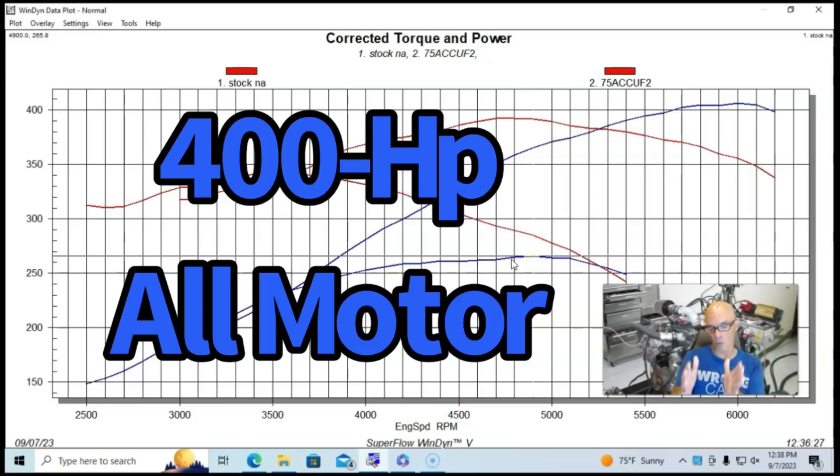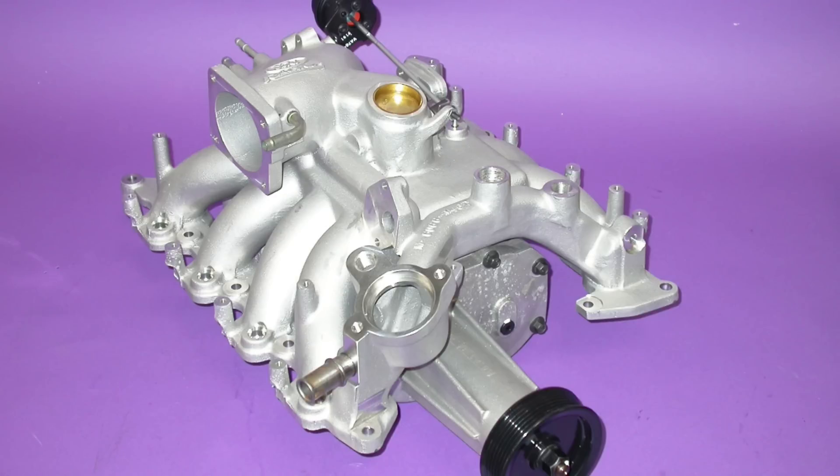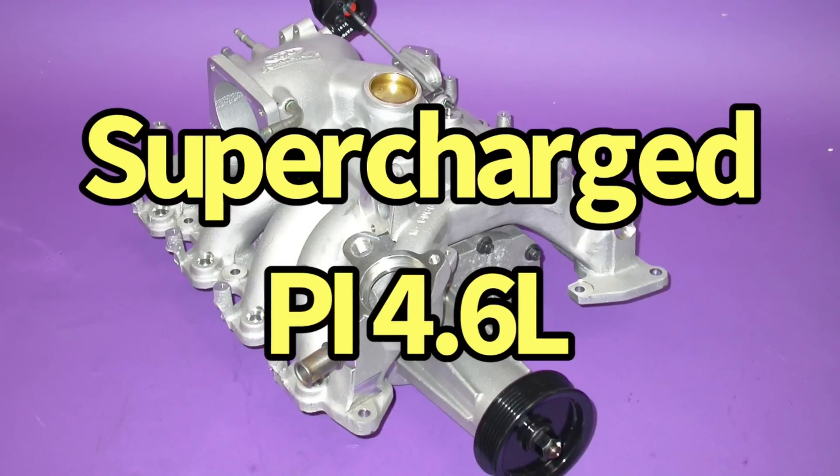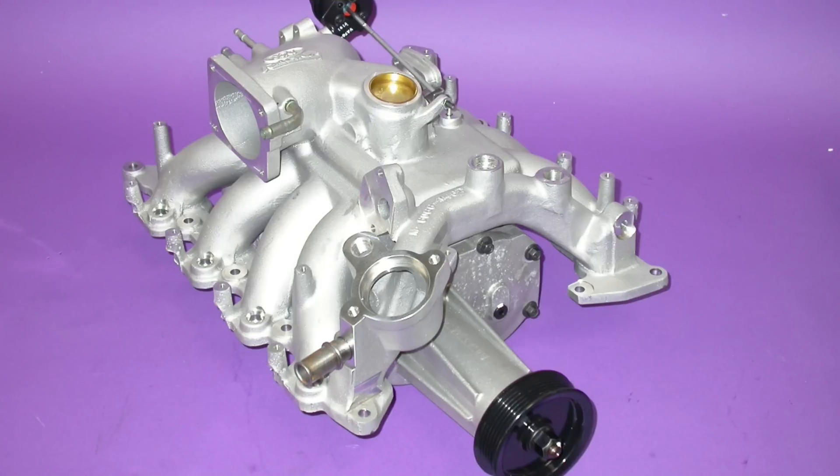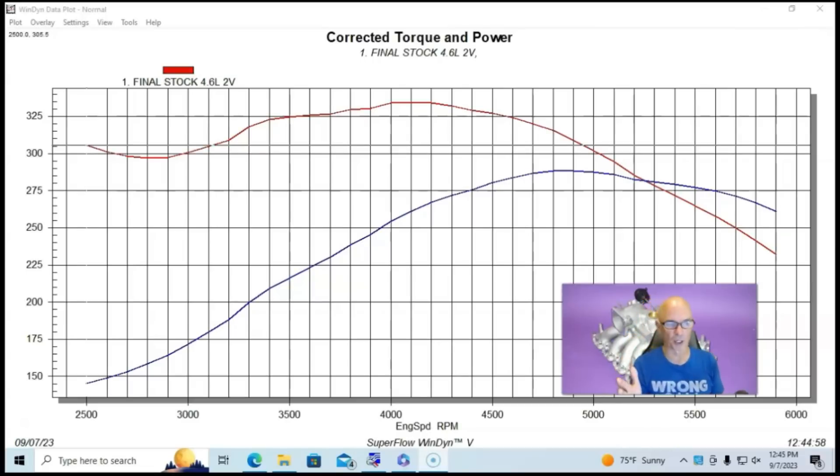So this is our naturally aspirated combination. Now let's take a look and see what happened when we added a supercharger to a stock PI motor. Okay guys, we've taken a look at our naturally aspirated combination that exceeded 400 horsepower. Now let's take a look at how we got there with a supercharger.